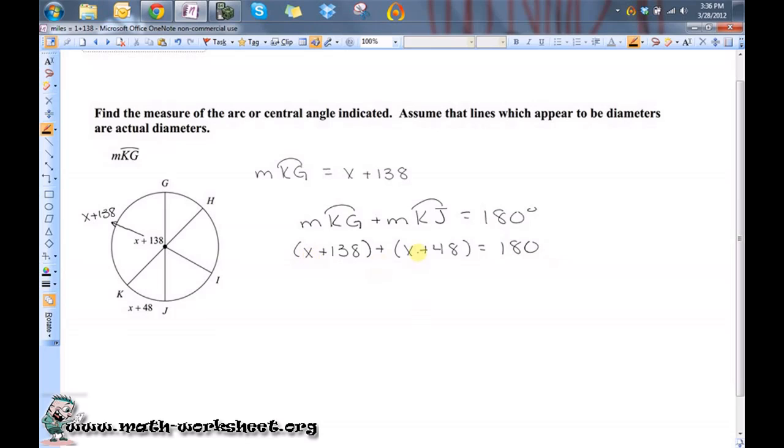So let's combine my like terms. So I got 2X plus 186 equals 180. Let's subtract 186 from both sides. So I'll get negative 6. And X is equal to negative 3 by dividing both sides by 2.